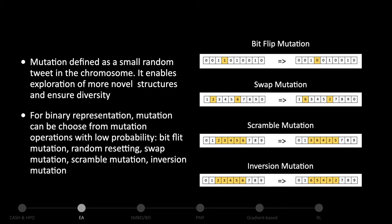Mutation is defined as a small random tweak in the chromosome. It enables exploration of more novel structures and ensures diversity. For binary encoding, mutation can be chosen from several operations with low probability: bit-flip mutation, random resetting, swap mutation, scramble mutation, and inversion mutation. Bit-flip mutation simply flips a bit. Swap mutation swaps genes within the chromosome. Scramble mutation scrambles part of the genes.